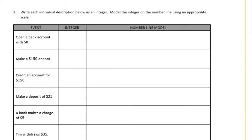Number two: write each individual description below as an integer. Model the integer on a number line using an appropriate scale. Okay, so open a bank account with zero dollars. So first he opens a bank account, there's nothing in it, he just has zero dollars. So our integer is zero because he has nothing. So let's draw our number line and I'm just going to start it at zero. So we can just plot our point at zero because he has zero dollars. Your number line could go up higher than 50 if you wanted to.